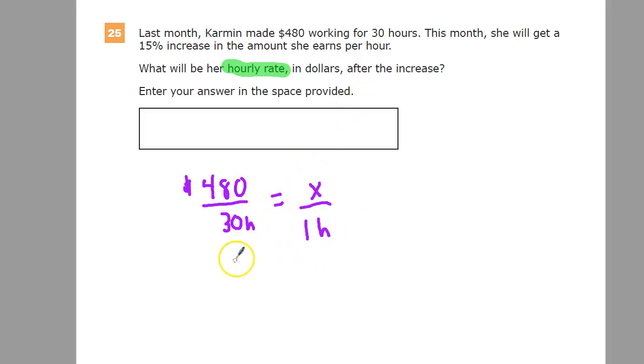Cross multiply, and you'll end up with 30X equals 480, which gets us back to my original idea that you're just going to end up dividing.